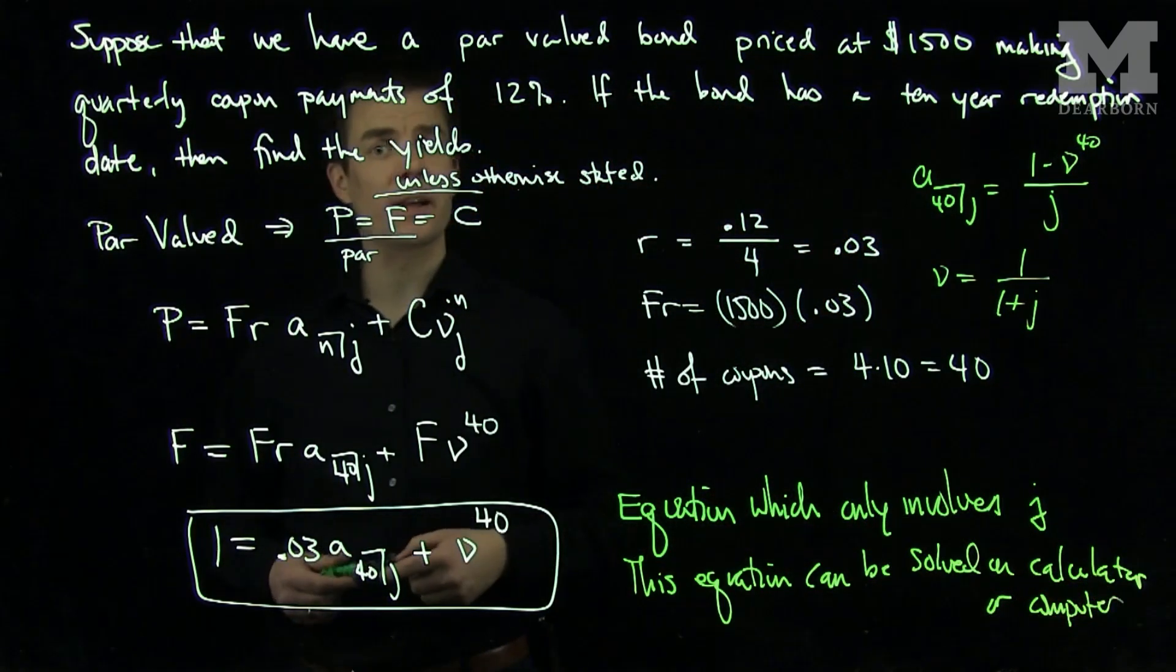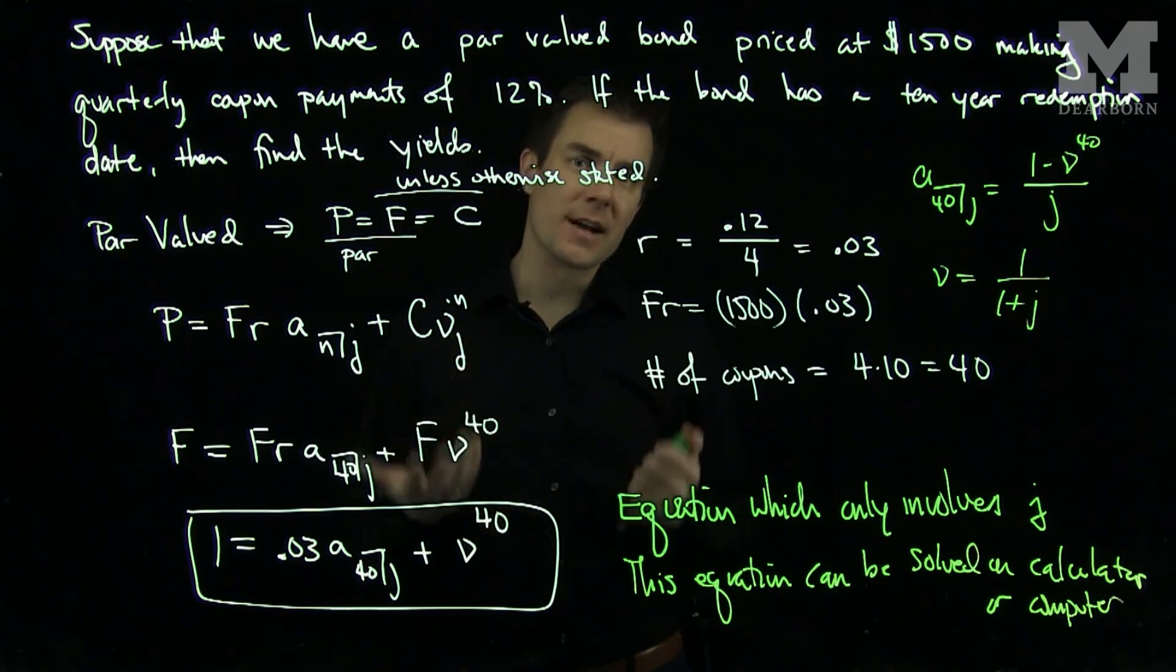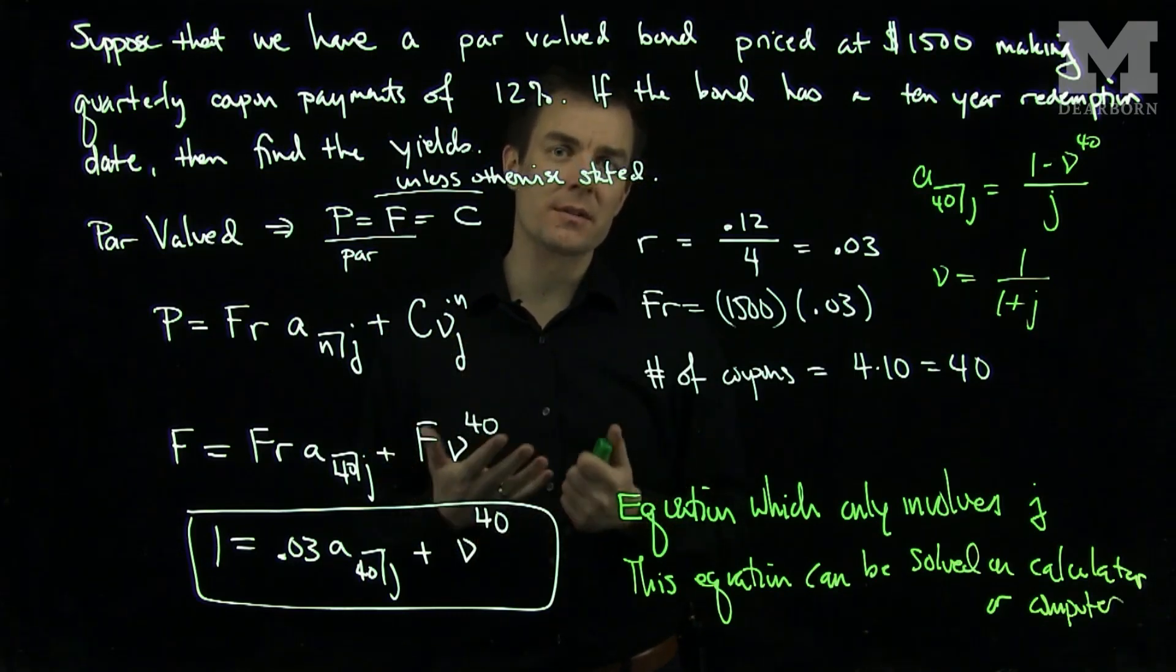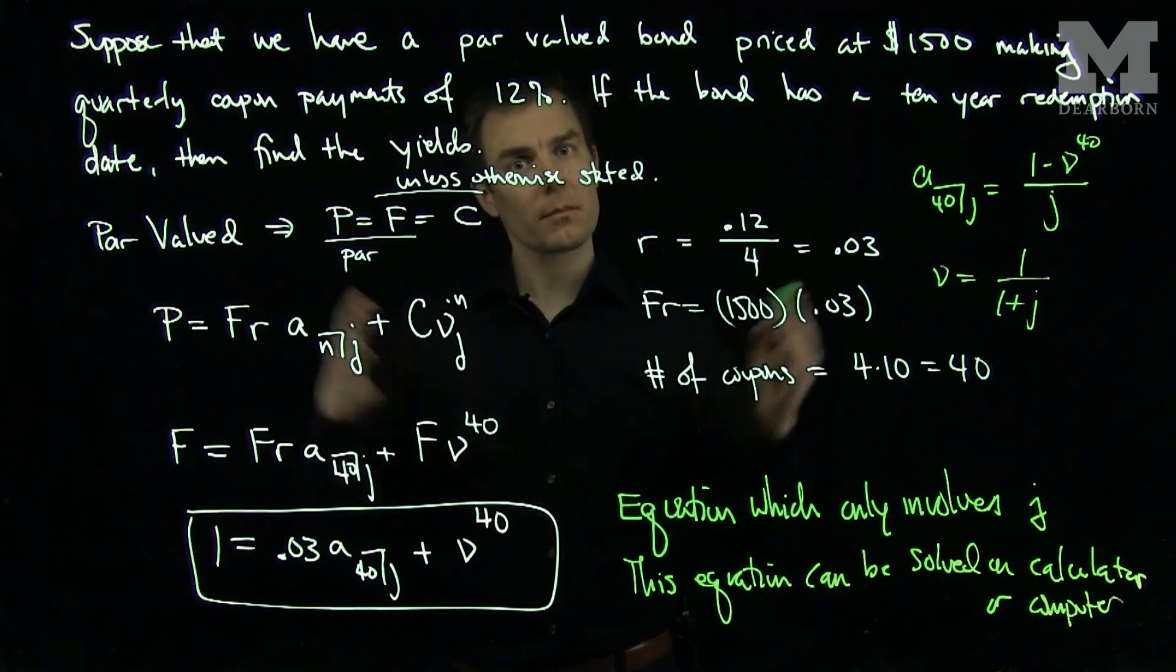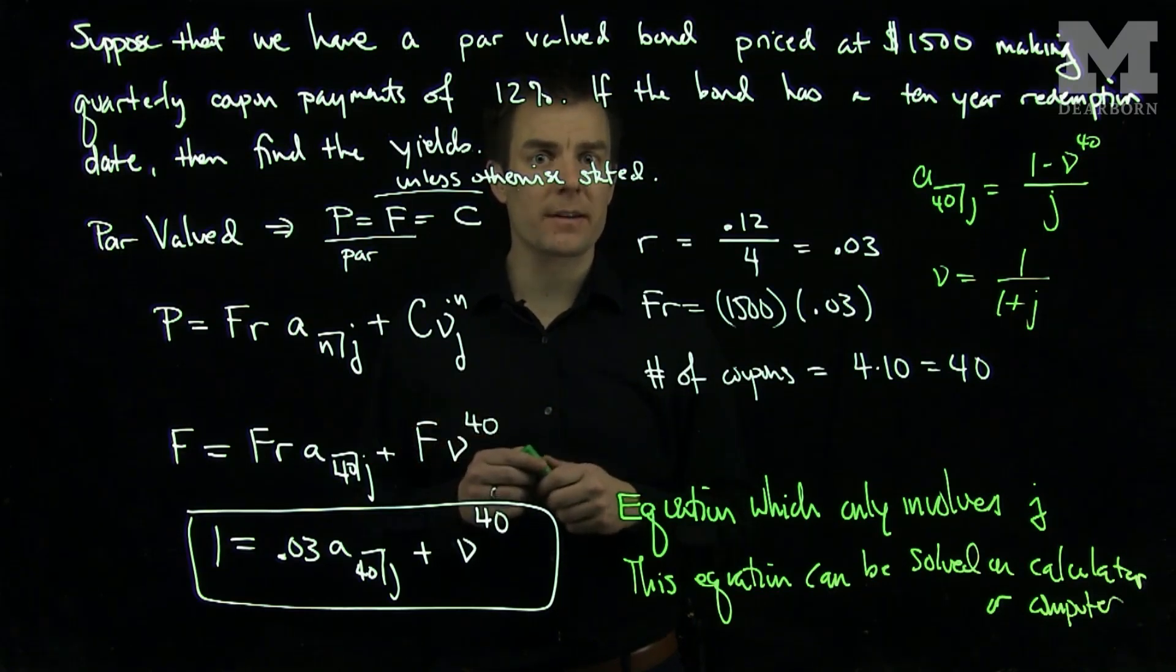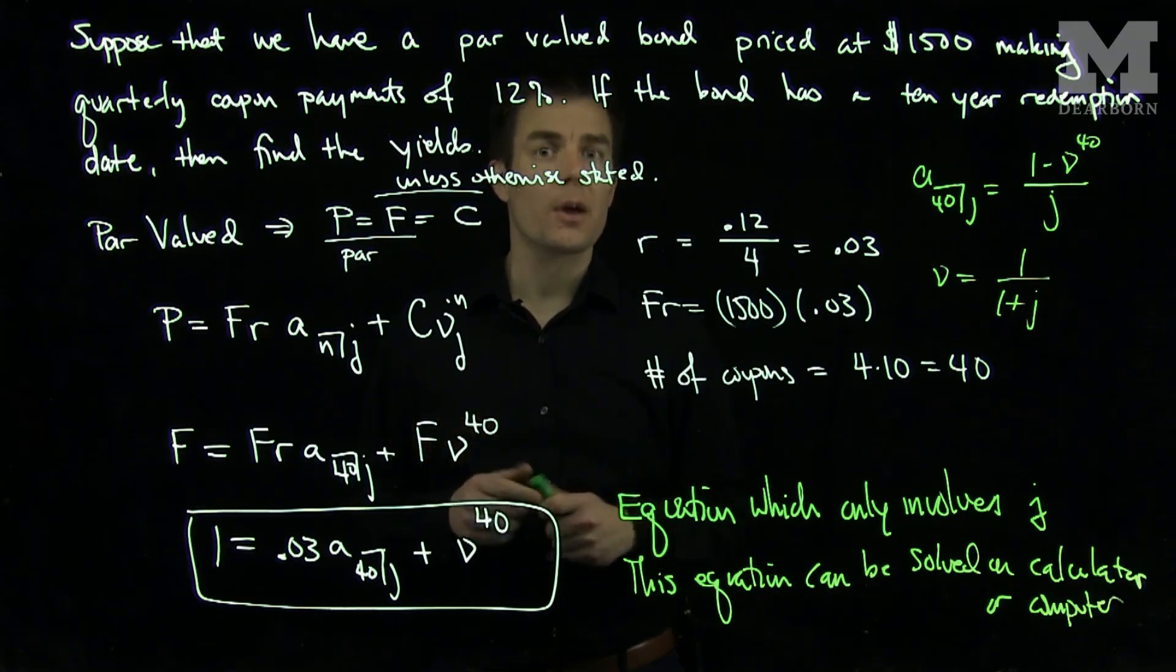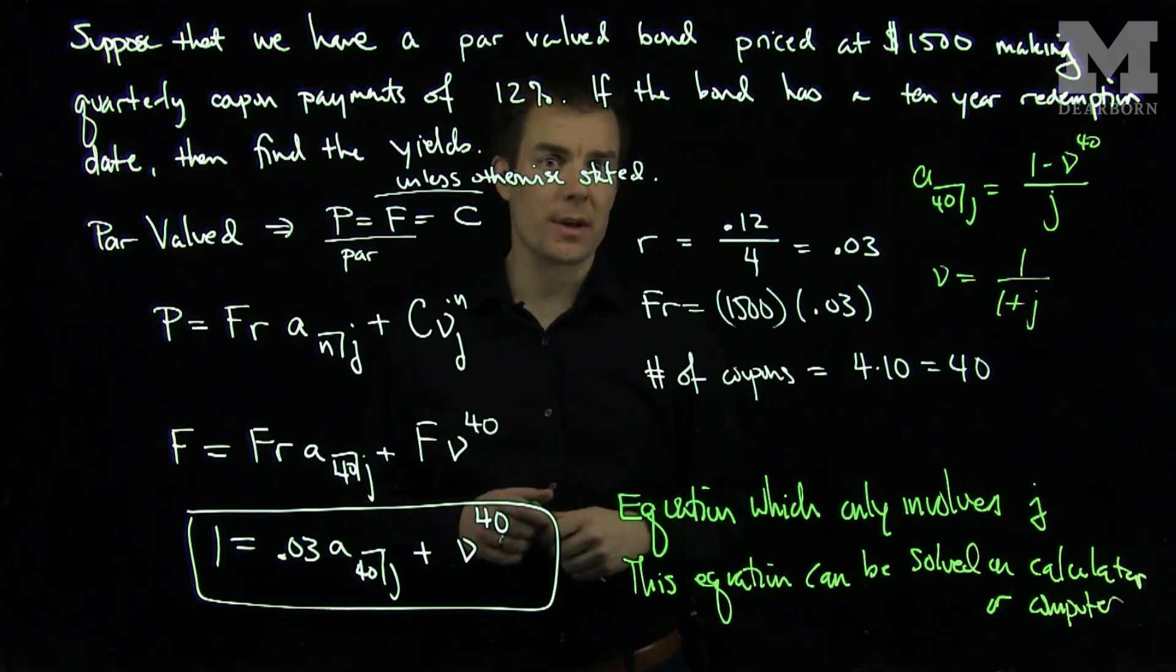So the parameters of the problem, the fact that it's priced at par, tells us that P and F are the same. The fact that it's not otherwise stated means that the redemption value is the face value. All those parameters plugged into the bond pricing formula will cancel out. And we'll be left with an equation that only involves the effective rate per quarter. Once we find the effective rate per quarter, we can find any of the corresponding interest rate yields for the bond.